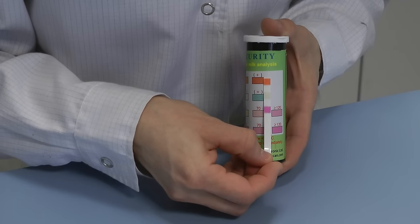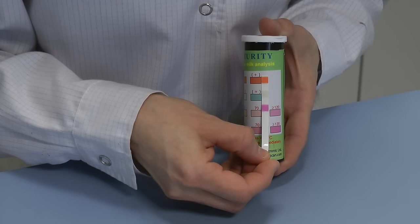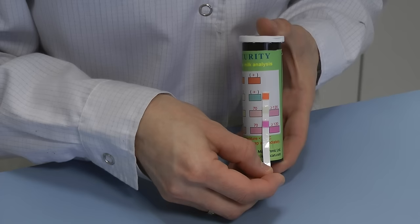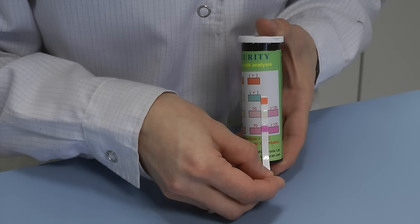When there is adulteration with neutralizers and urea, the third, last indication area is changing its color from yellow to intensive pinkish red.